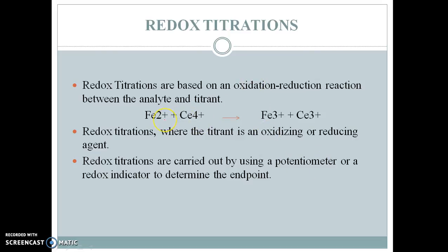Let us see how this titration is performed. For example, if we have a solution of ferrous ion Fe2+ and we want to know the concentration of this Fe2+ ion, then we have to titrate this Fe2+ ion solution with the ceric ion solution, that is ceric sulfate CeSO4. In this titration, the ceric ion acts as an oxidizing agent and the ferrous ion acts as a reducing agent. The ceric ion oxidizes the ferrous ion Fe2+ into ferric ion Fe3+, and the oxidizing agent itself gets reduced to cerous ion Ce3+. Redox titrations are carried out using a potentiometer or a redox indicator to determine the endpoint.